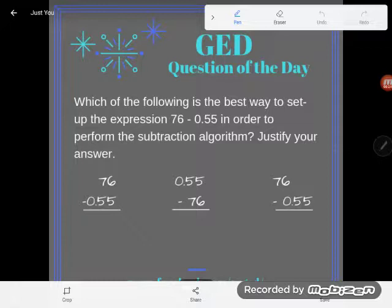I know a lot of you guys are used to saying 0.55 or point 55. I won't ding you for it, but it doesn't make a lot of sense. So 55 hundredths. In order to perform the subtraction algorithm, justify your answer.